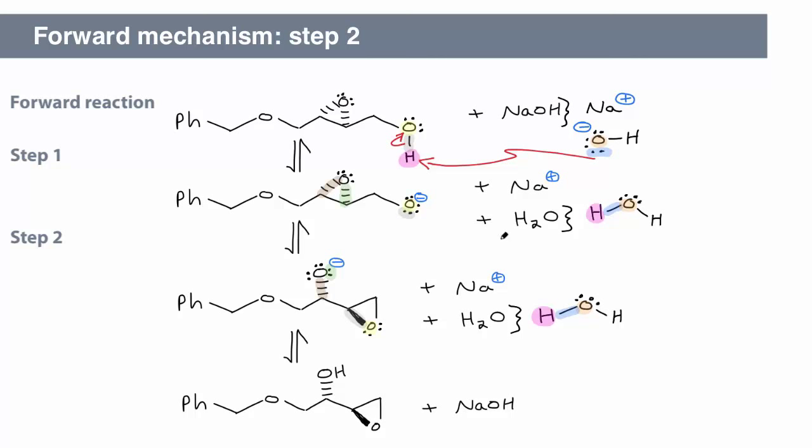Otherwise said, a new epoxide forms, while the original epoxide breaks. You will learn later that the mechanism of this step accounts for the configuration of the stereocenters involved, but for now our focus is on atom connectivity.